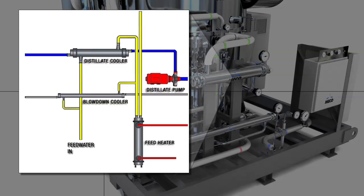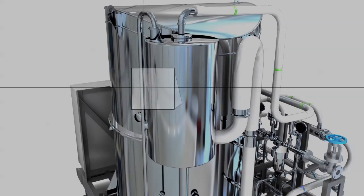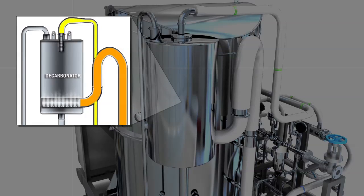This efficient heat exchange in the coolers minimizes the system's energy consumption by reducing demand on the feed heater. The preheated feed water flows to the decarbonator and is sprayed through rising vent vapor which strips non-condensables from the feed water before entering the evaporator.